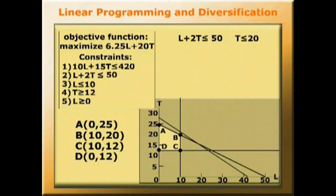Now we can find the other coordinates. L plus 2T is equal to or less than 50. L plus 2, and we've already established that T is 20, so L plus 2 times 20 is equal to or less than 50. So L is equal to or less than 10.